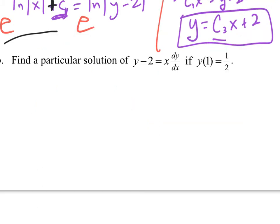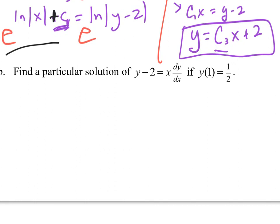And then for this other part, y equals, I have my general solution. So now I just have to plug in (1, 1/2) to find the c value. So I get 1/2 = c3·x, which is 1, plus that would be a 2. Solving this would be c3 = -3/2.